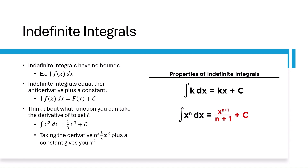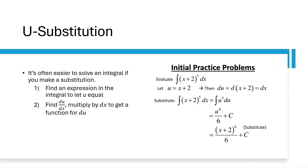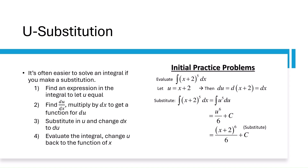For example, take x squared. Think of what function you take the derivative of to get x squared — you take the derivative of 1/3 x cubed plus any constant C to get x squared. Sometimes indefinite integrals are harder to evaluate. Sometimes you have to use U substitution to simplify an integral. First, find an expression in the integral to let U equal. Then find the derivative du/dx and multiply both sides by dx to get a function for du. Then substitute in u and change dx to du, evaluate the integral, and then change u back to the function of x.